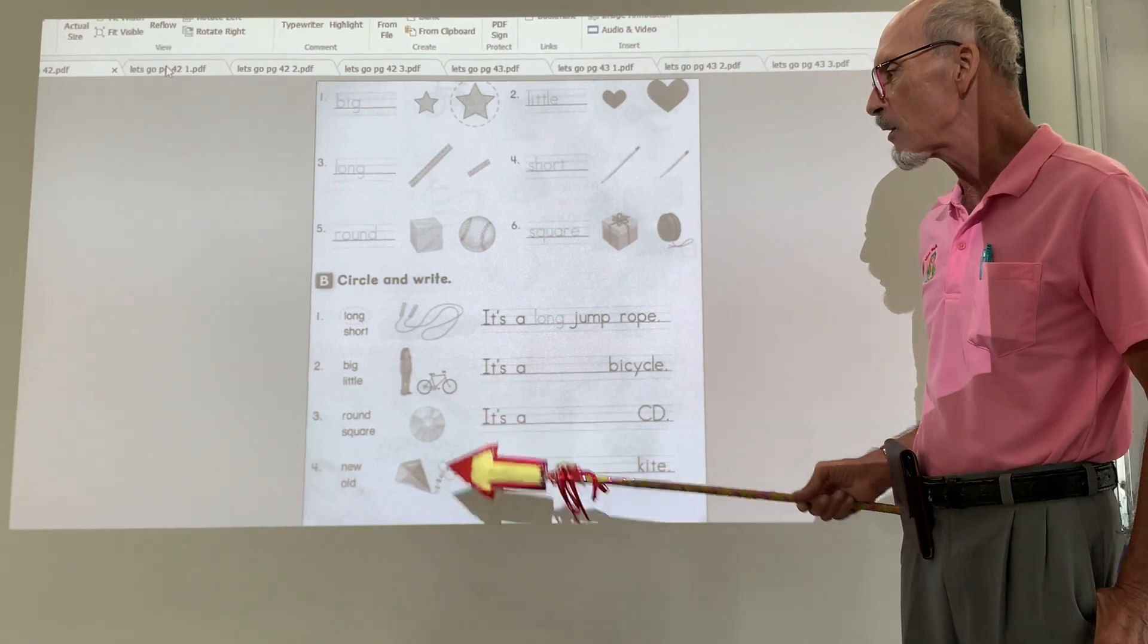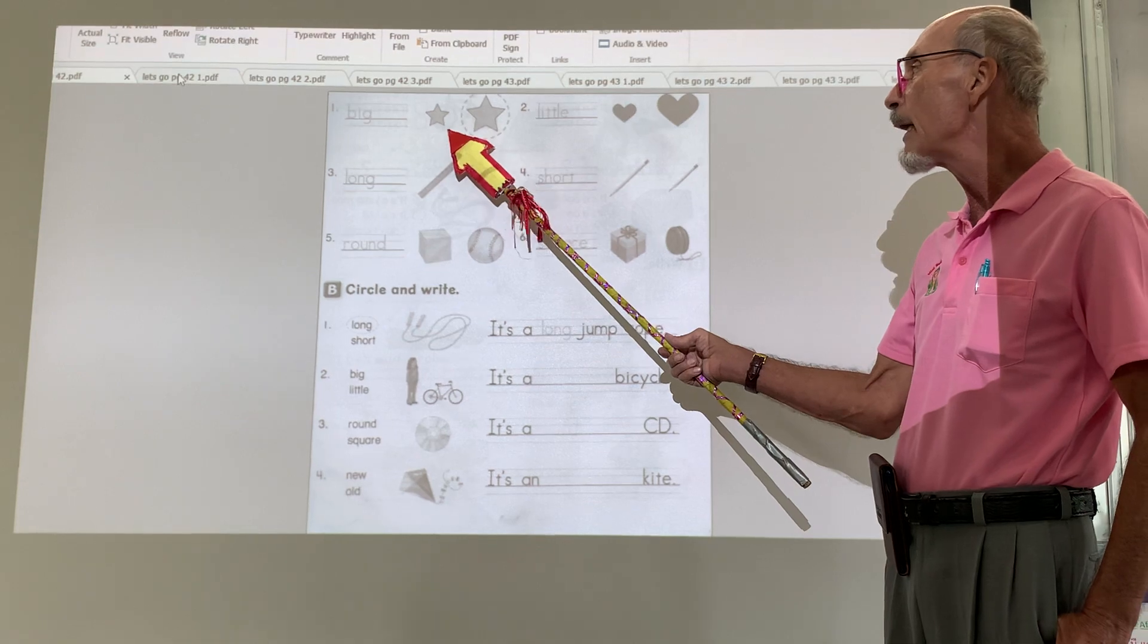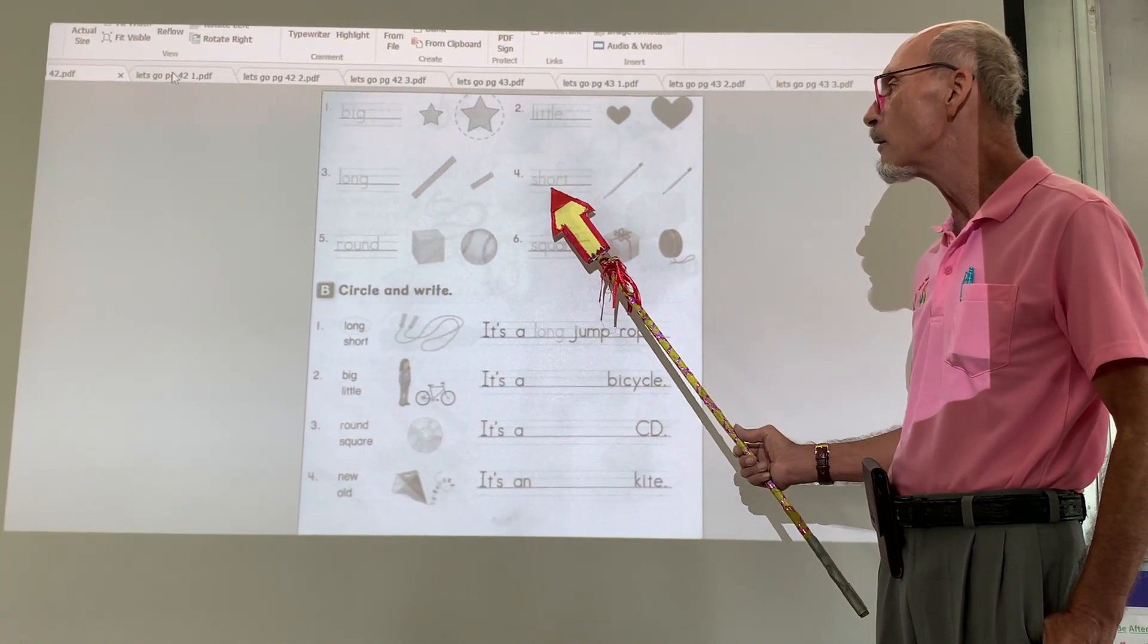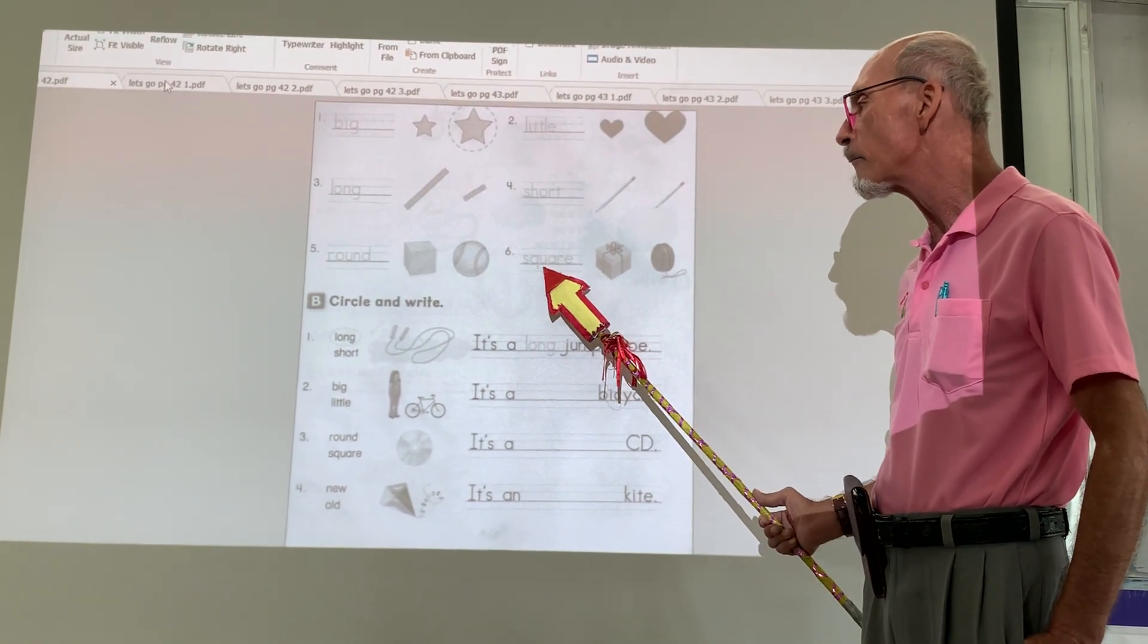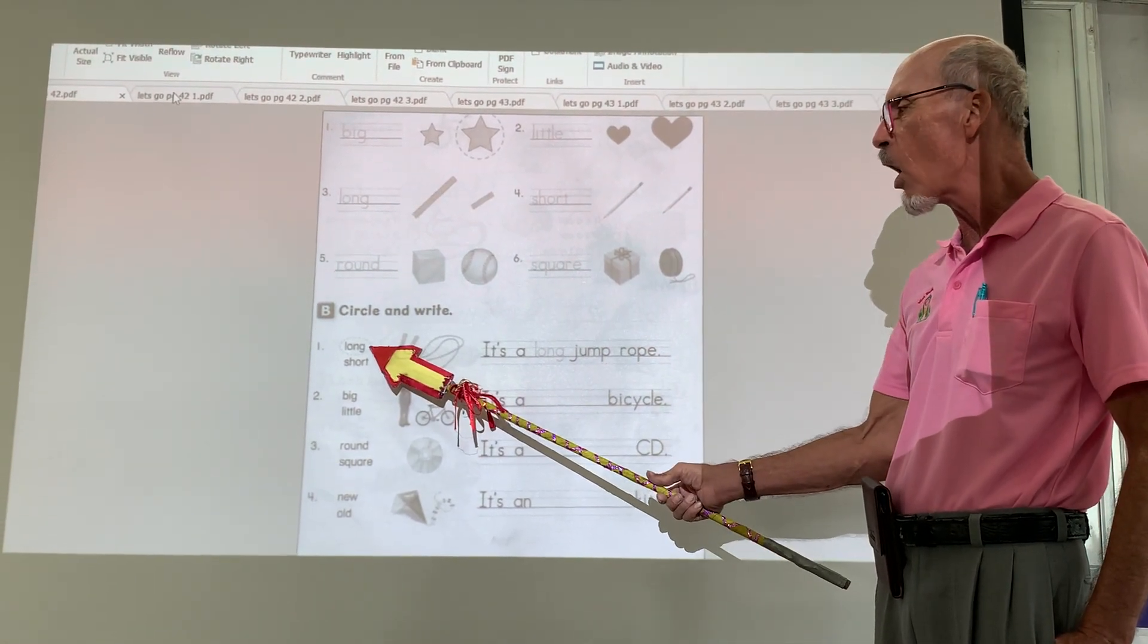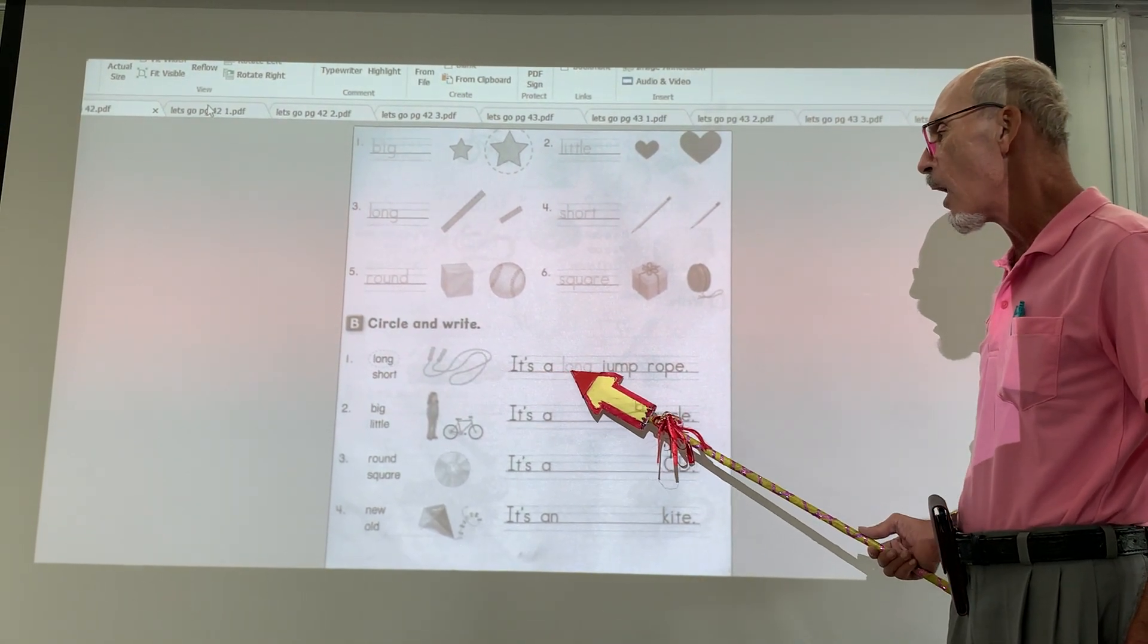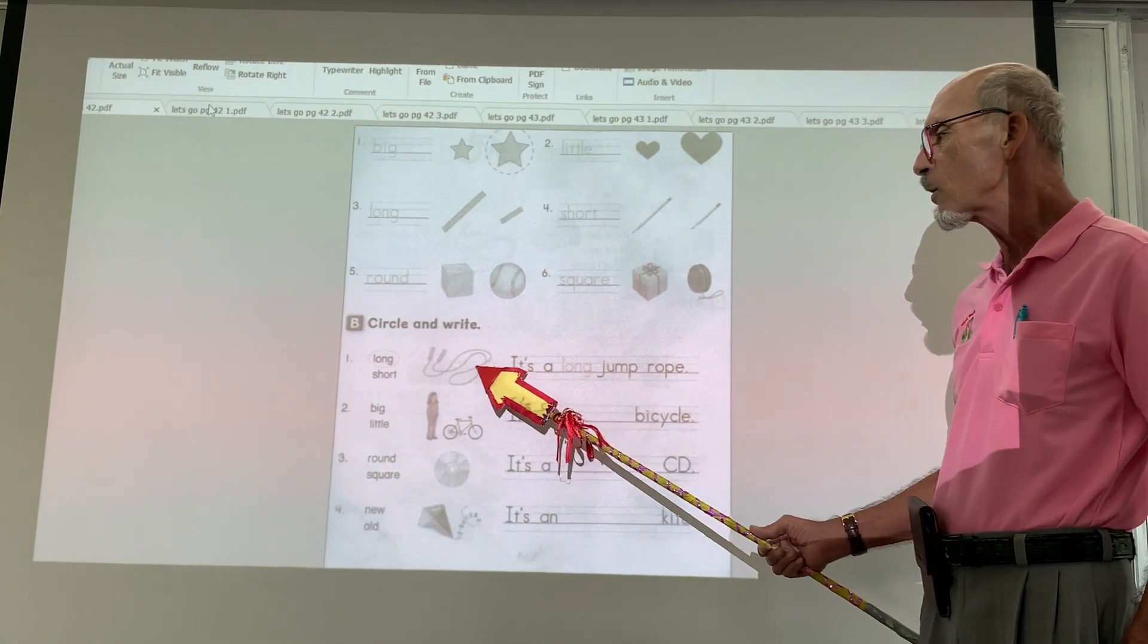The next part of this, we're going to look. Remember, we talked about big, little, long, short, round, square. Now, look at this. It says long. A long jump rope. It's a long jump rope. It's long.